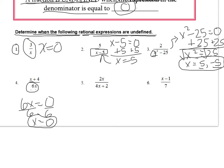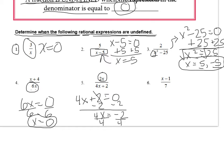Looking at example 5, it's okay that there's a variable in the top because the top has nothing to do with making a fraction undefined. In order for a fraction to be undefined, whatever's in the bottom has to equal 0. So take the denominator 4x plus 2, set it equal to 0, and solve for x. Subtracting 2 from both sides gives you 4x equals negative 2. Dividing by 4 on both sides — be careful here — it's not x equals negative 2; negative 2 divided by 4 is actually the fraction negative one-half. So negative one-half is the value of x that makes this fraction undefined.